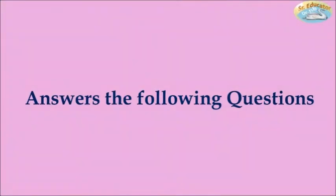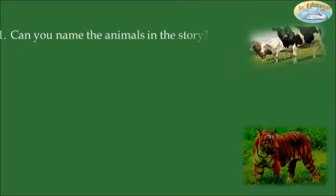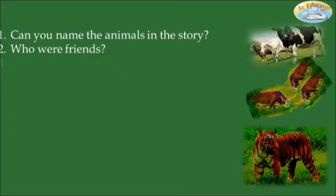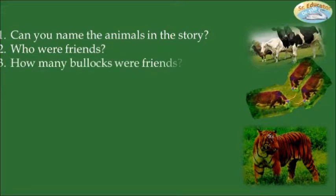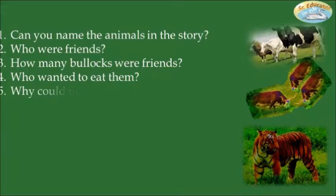Children, now answer the following questions. Can you name the animals in the story? Who were friends? How many bullocks were friends? Who wanted to eat them? Why could not the tiger kill the bullocks?